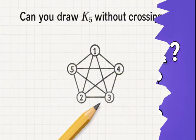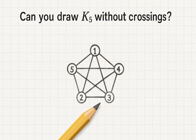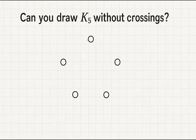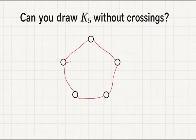Let me give you a challenge, can you draw the complete graph K5 on a piece of paper without any of its edges crossing? Here's what that means. You start with five vertices, connect every pair with an edge, and try to do it so that no two edges cross. Sounds simple? Go ahead and try.